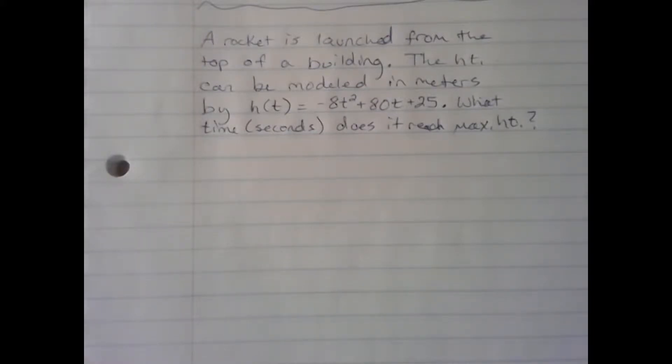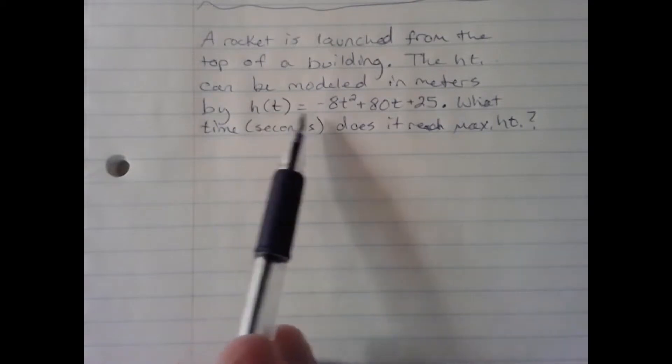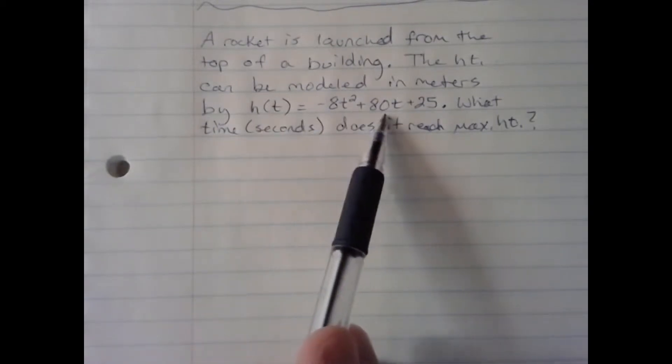So in this scenario, the problem states the rocket is launched from the top of a building. The height can be modeled by the equation h(t) = -8t² + 80t + 25.